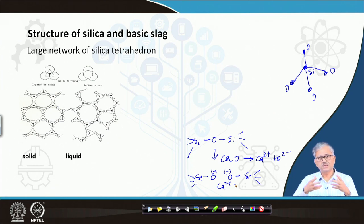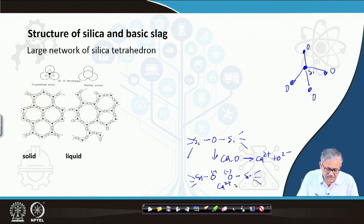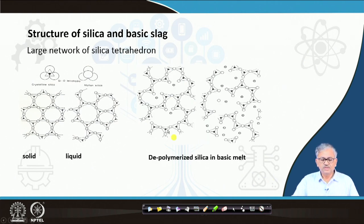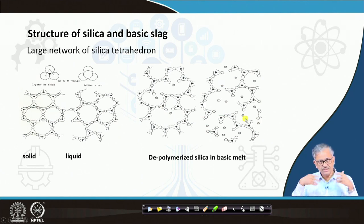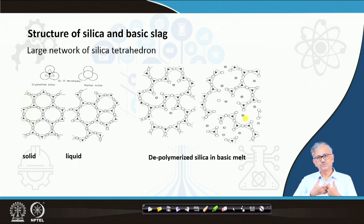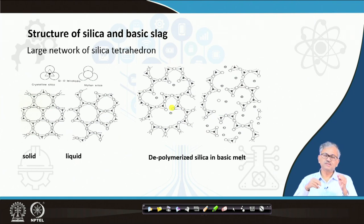Basically, lime depolymerizes the structure, and if you depolymerize it, your viscosity will be reduced. That is the depolymerization picture - you can see the calcium atom with the two O- ions (O- O- and Ca2+). Similarly, calcium depolymerizes the structure: when lime goes in, it depolymerizes, viscosity decreases, and the liquid becomes more fluid. That is the way basic slag becomes more fluid. Silica slag is very viscous; if you add basic oxide like lime, it becomes a very fluid slag because of depolymerization.